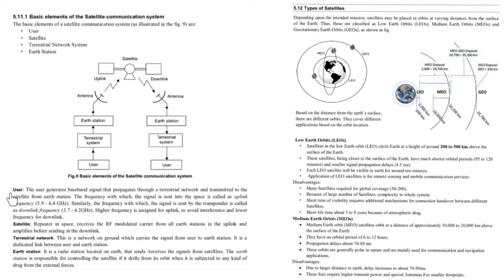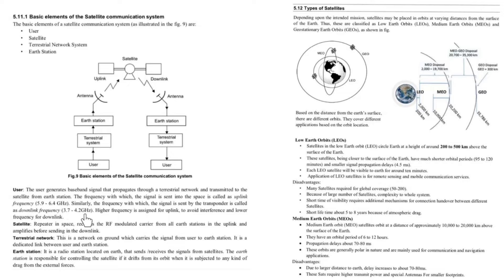First, let us see what is a user. The user generates the baseband signal that propagates through the terrestrial system and is transmitted to the satellite through the earth station. The frequency with which the signal is sent to space is known as uplink frequency, which will be of the order of 5.9 to 6.4 GHz. Similarly, the frequency with which the signal is sent by the transponder is called downlink frequency, which will be 3.7 to 4.2 GHz.